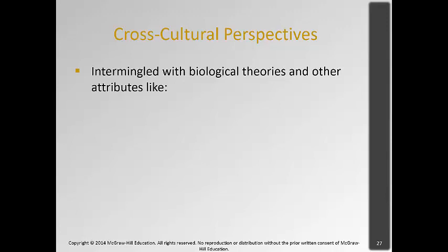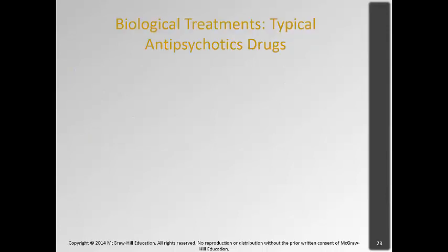From a cultural perspective, schizophrenia is intermingled with biological theories like stress, lack of spiritual piety, and family dynamics. Cross-culturally, schizophrenia is expressed somewhat differently, and people view the symptoms differently. People who have more family support and more understanding from their communities tend to have better outcomes.